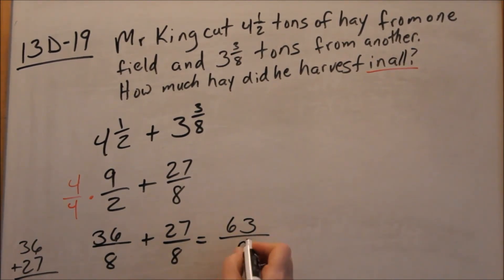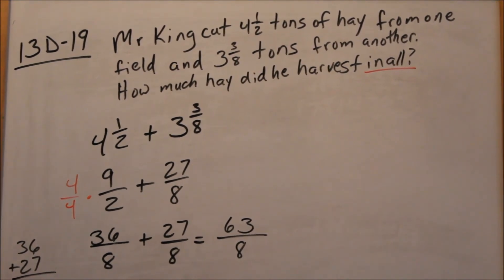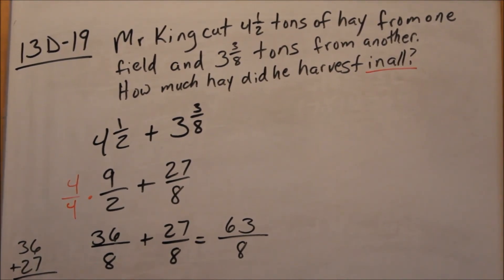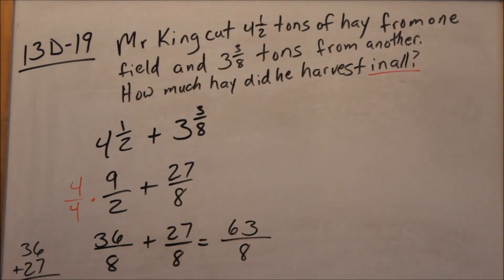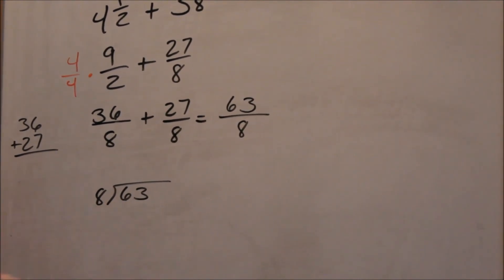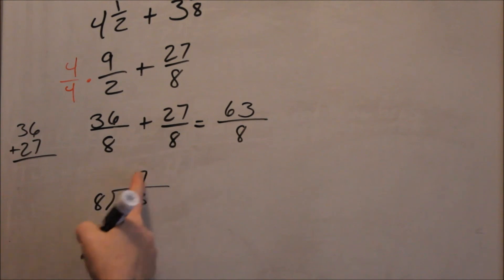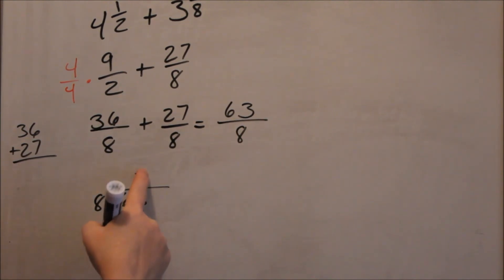So, over 8. Then, change this back. The book will change it back into a mixed number. So, that means 63 divided by 8. 8 into 63. What's the most times 8 goes into 63? It should be 7, because 8 would be 8 times 8, 64. Too many. So, 7 times 8 is 56.